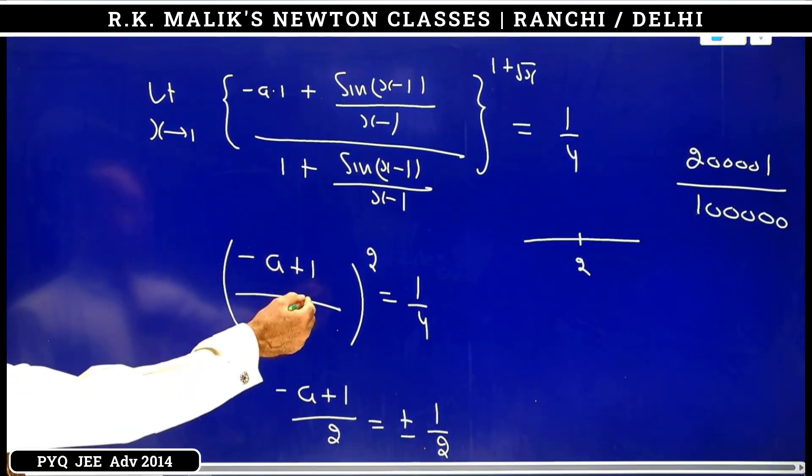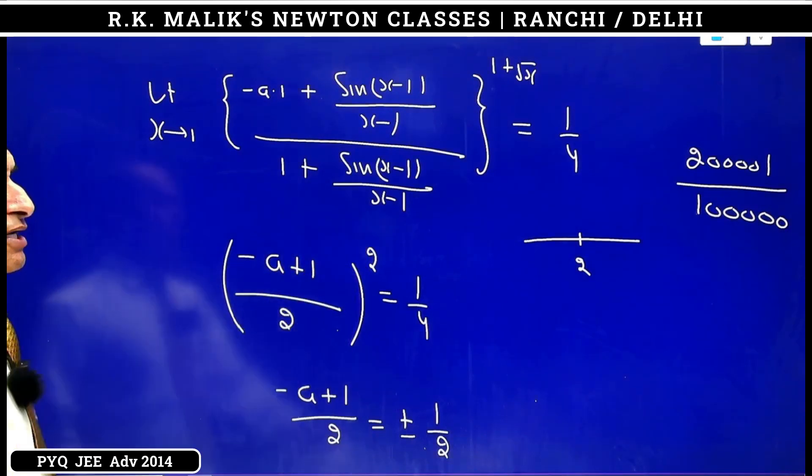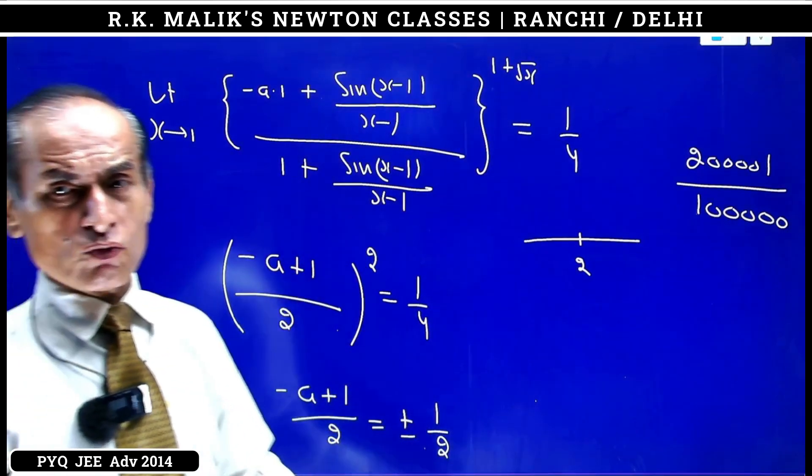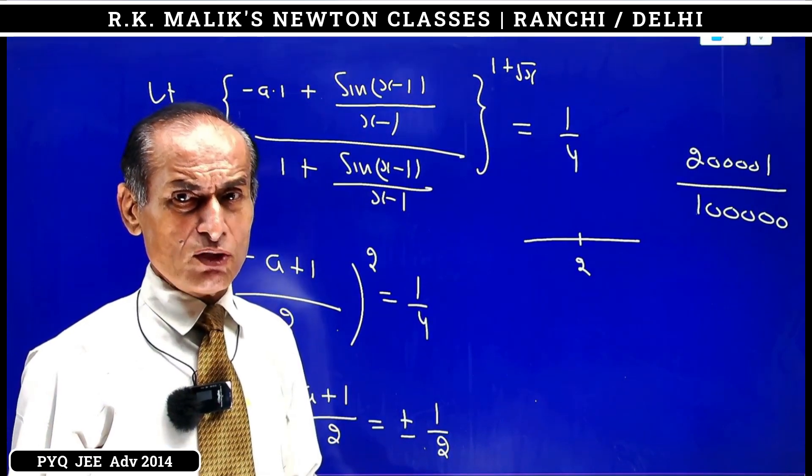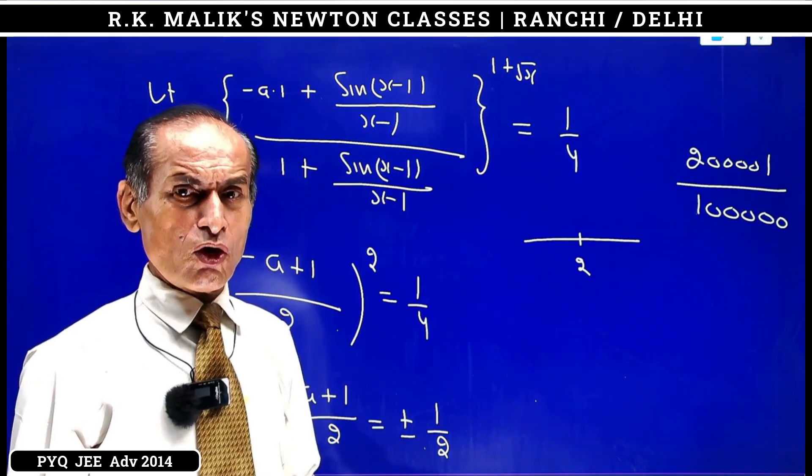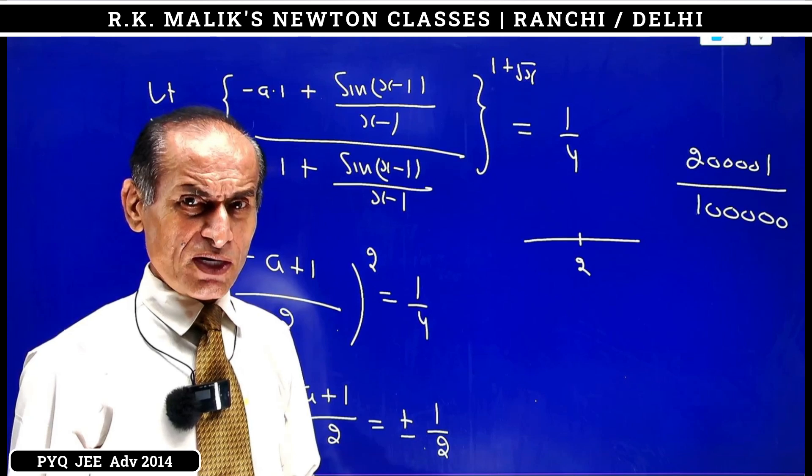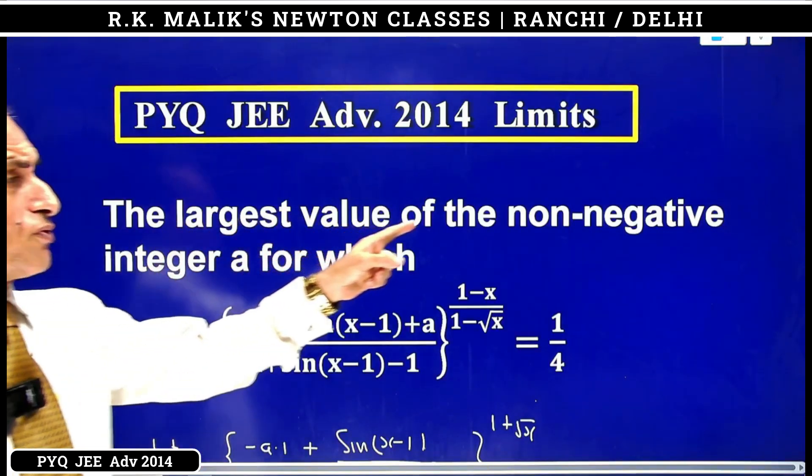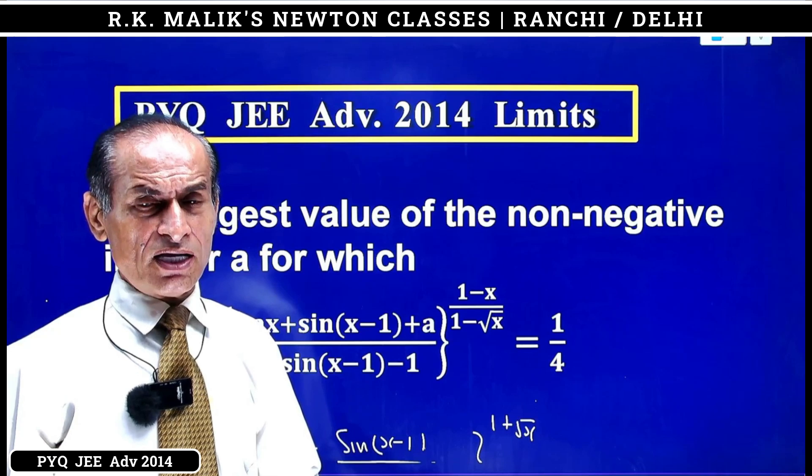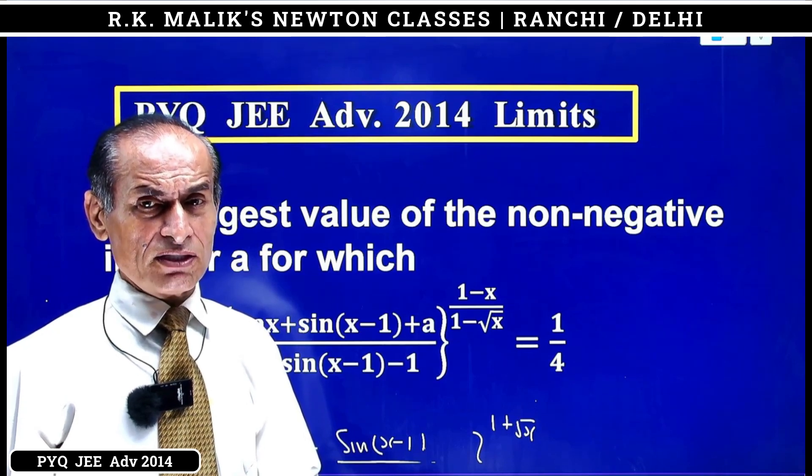But for a equal to 0, it will be tending to 1 by 2, and the power will be tending to 2, so the answer will surely be tending to 1 by 4. Therefore a equal to 0 is the only possible value of a. So the largest value of a is 0 and the smallest value of a is also 0. The question asked for the largest value of non-negative integer a, hence the largest value of non-negative integer a is 0.